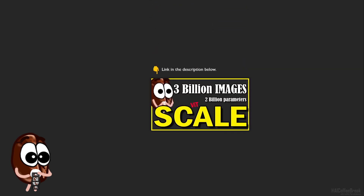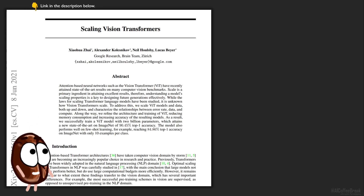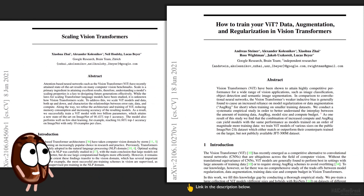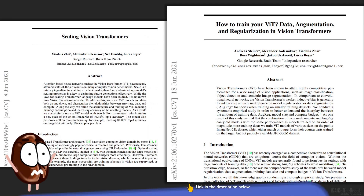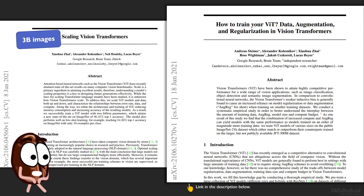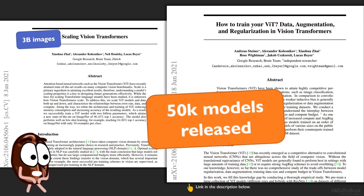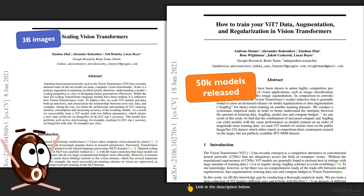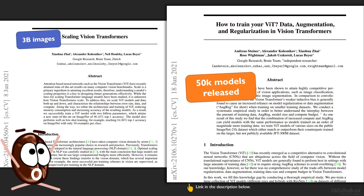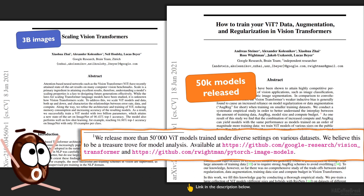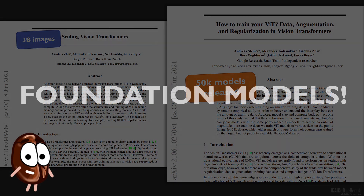Hello there! Perhaps you noticed that Ms. Coffee Bean is fascinated by lots and lots of data. Too fascinated, if you ask me! With the scaling law paper in Vision Transformers, and now with How to Train Your ViT, we are seeing impressive performance of big transformer models on lots and lots of data. With the release of How to Train Your ViT, more than 50,000 models have been released by the Google Brain team, which is great, because these models do not have to be trained again and the whole community can start using them.